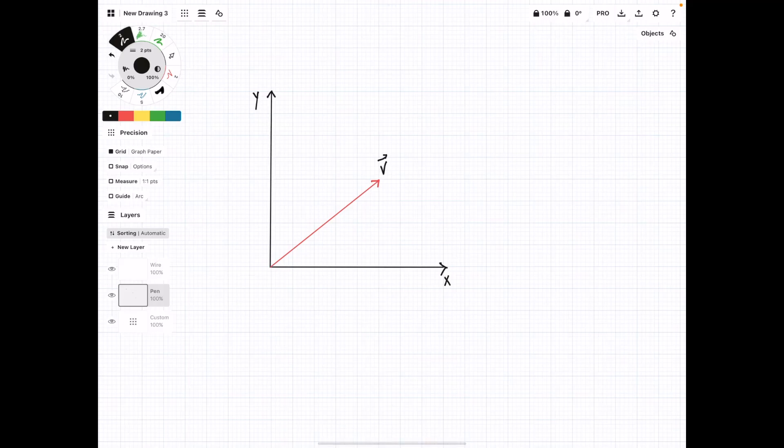In this video, we're going to talk about finding the direction cosines of a vector in two and three dimensions. So to start off, let's say we have a vector in two dimensions, v, here.